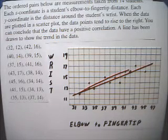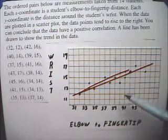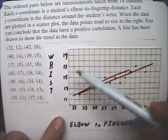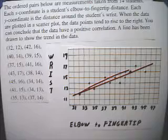So, the line shows the tendency. As the elbow to fingertip goes up, so does the wrist go up. That's the tendency of this information.